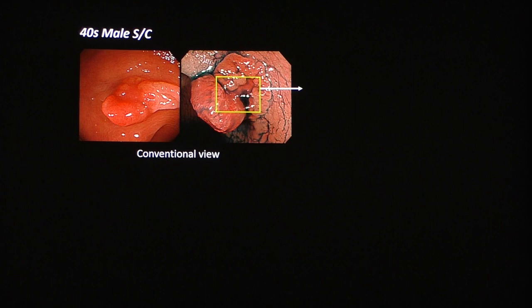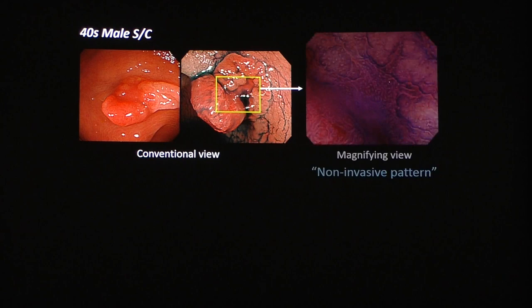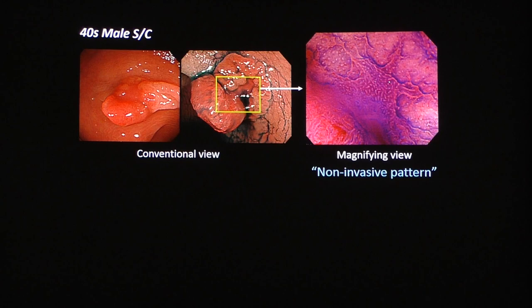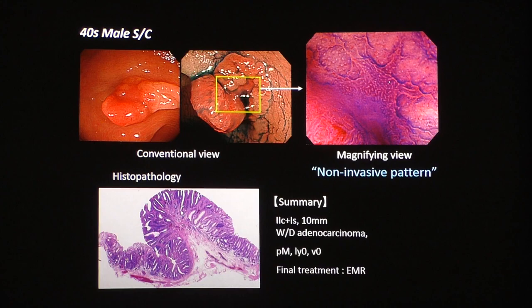How about this lesion? After spraying Indigo Carmine, we can see a demarcated area inside the lesion. However, the difference from the previous case is the pit pattern inside the demarcated area. In this case, the pit pattern is not so severely irregular — at most a 3S pit or 3L pit. So this lesion has a demarcated area, but inside the demarcation we cannot see 5I severe irregularity. This lesion is negative for invasive pattern, and is considered to be intramucosal lesion or, at worst, superficial submucosal invasive cancer. Endoscopic resection was performed and pathological results confirmed intramucosal neoplastic lesion. Using crystal violet staining, very accurate diagnosis is possible.